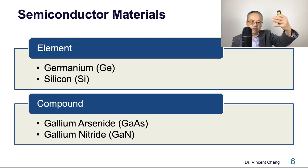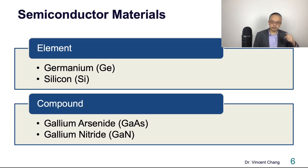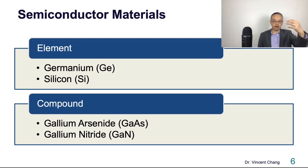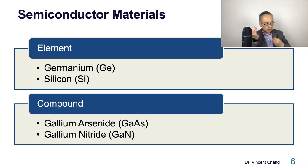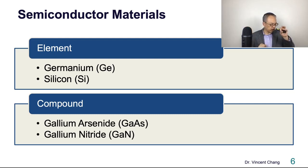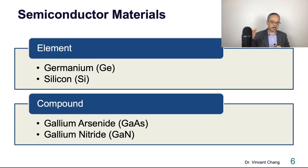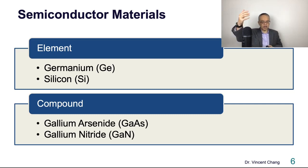Element semiconductor and compound semiconductor. The two most famous element semiconductor materials are germanium and silicon. In the compound category, gallium and arsenic form gallium arsenide, and gallium and nitrogen can form a compound called gallium nitride. So gallium arsenide and gallium nitride belong to the compound semiconductor category.